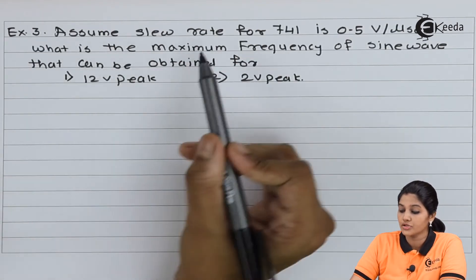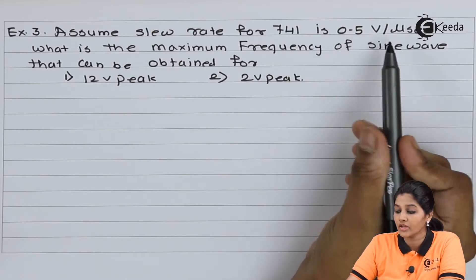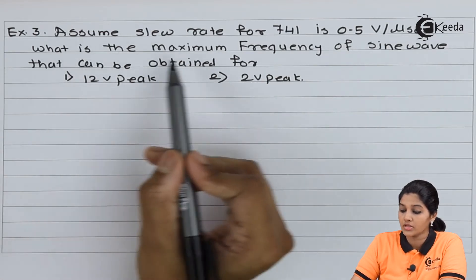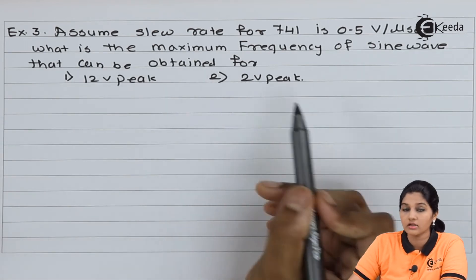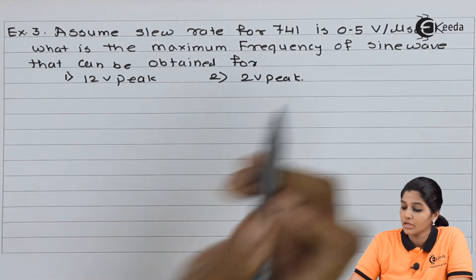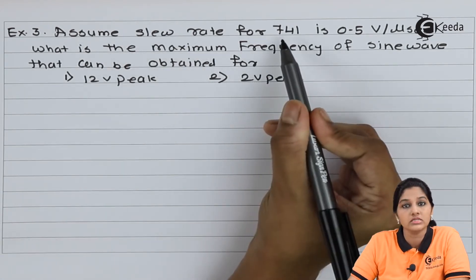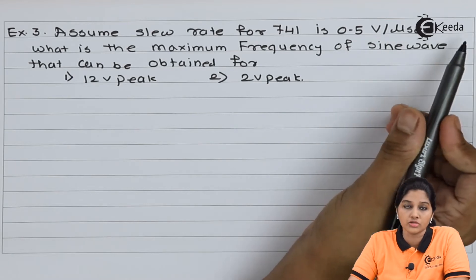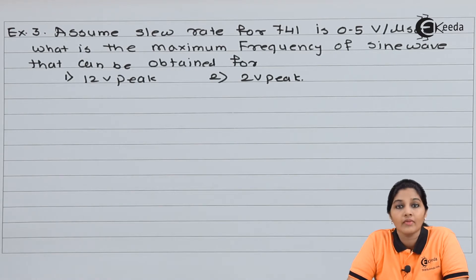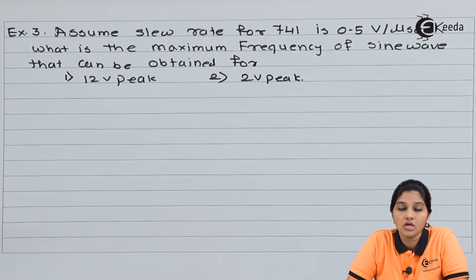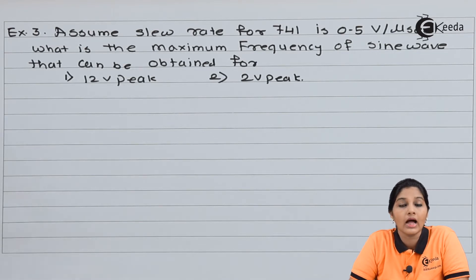Assume slew rate for IC 741 is 0.5 volt per microsecond. What is the maximum frequency of a sine wave that can be obtained for 12 volt peak and for 2 volt peak? Slew rate is nothing but rate of change of output voltage per unit time — that means how fast the output of op-amp gets changed. It can also give the frequency of operation of op-amp.